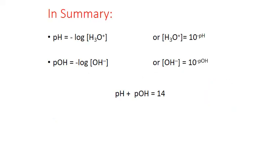In summary, pH is the negative log of the hydronium ion concentration, while pOH is the negative log of the hydroxide ion concentration. Both simply represent the negative of the base-10 exponent for each concentration. We can relate hydronium and hydroxide ion concentrations through the ion product expression, and we can relate pH and pOH for any solution because they must add up to 14 at 25 degrees Celsius.